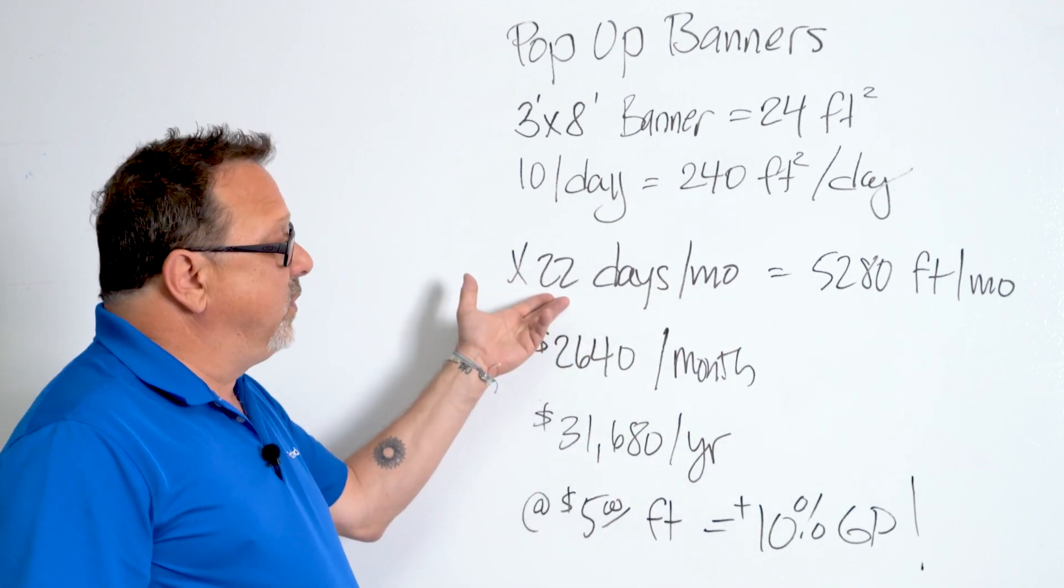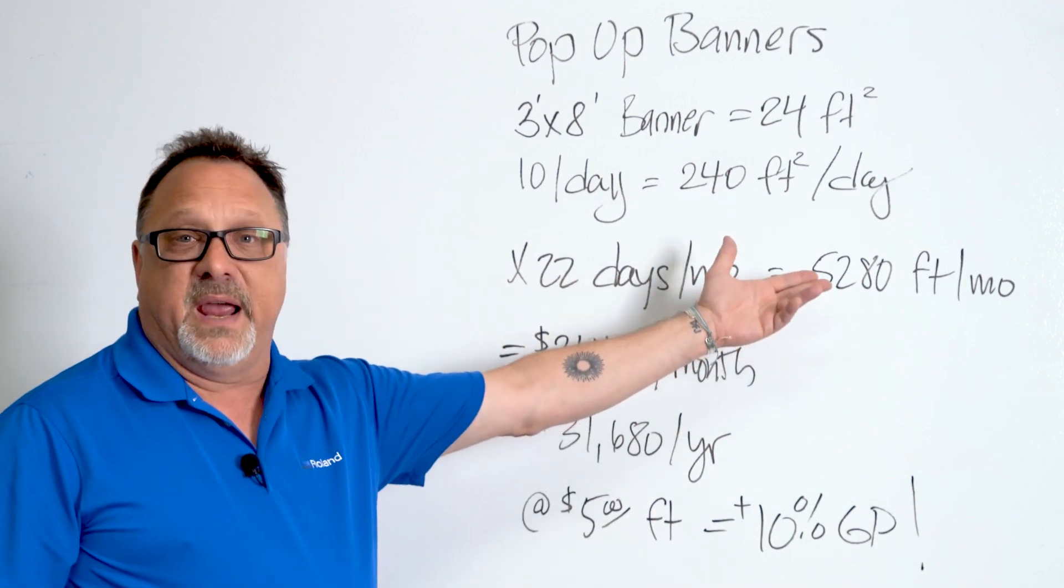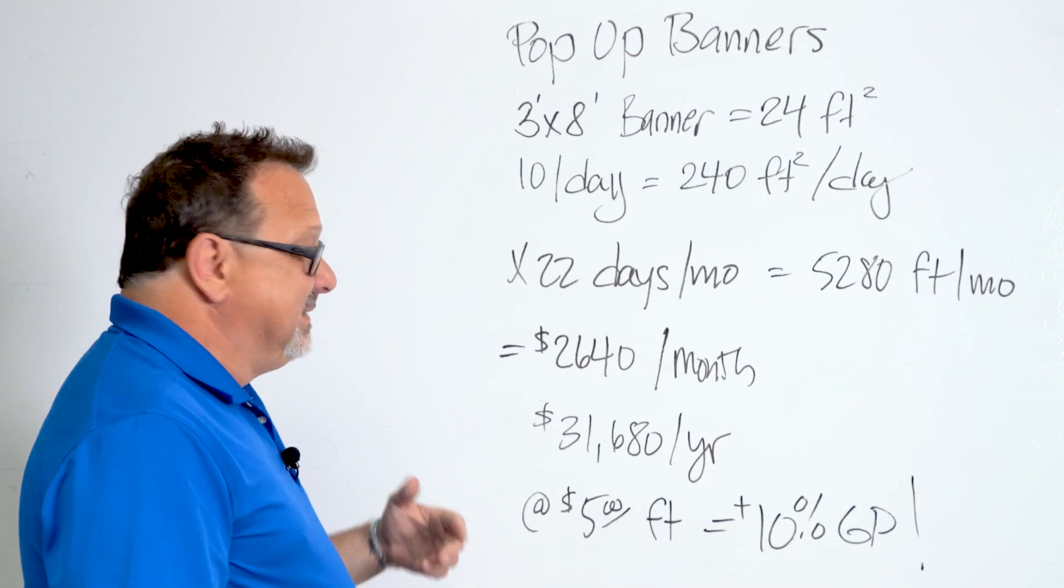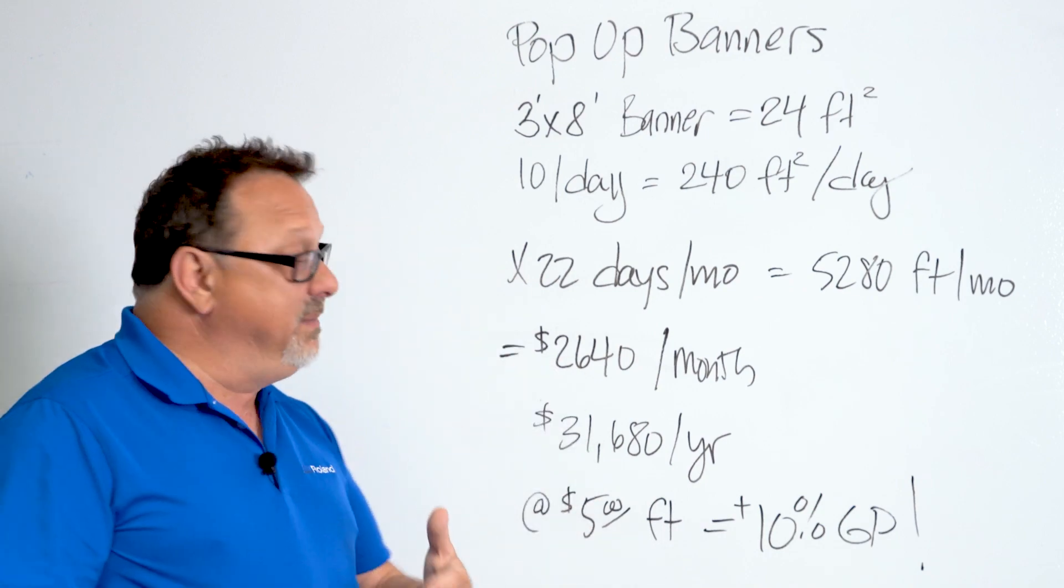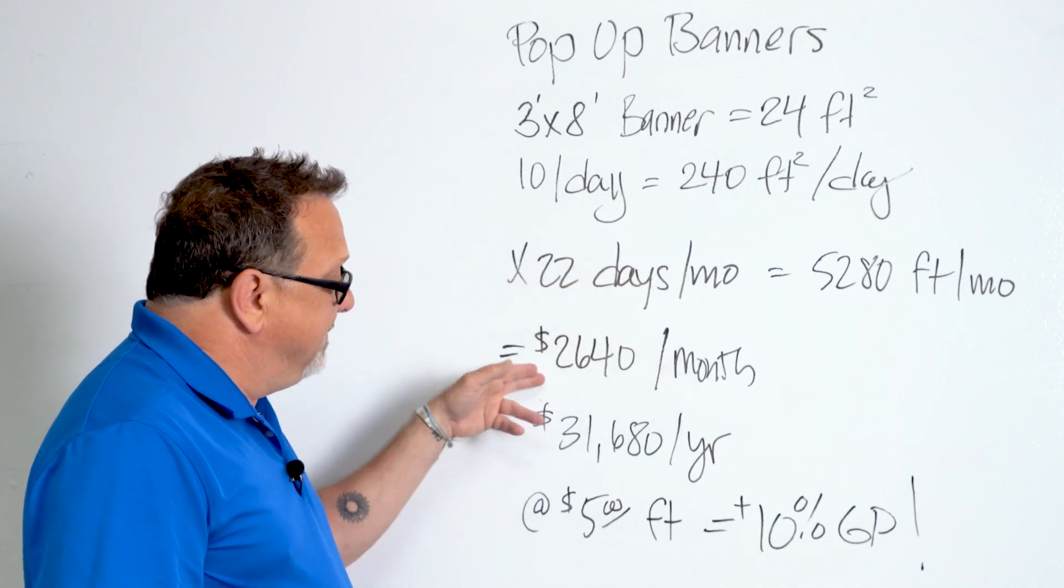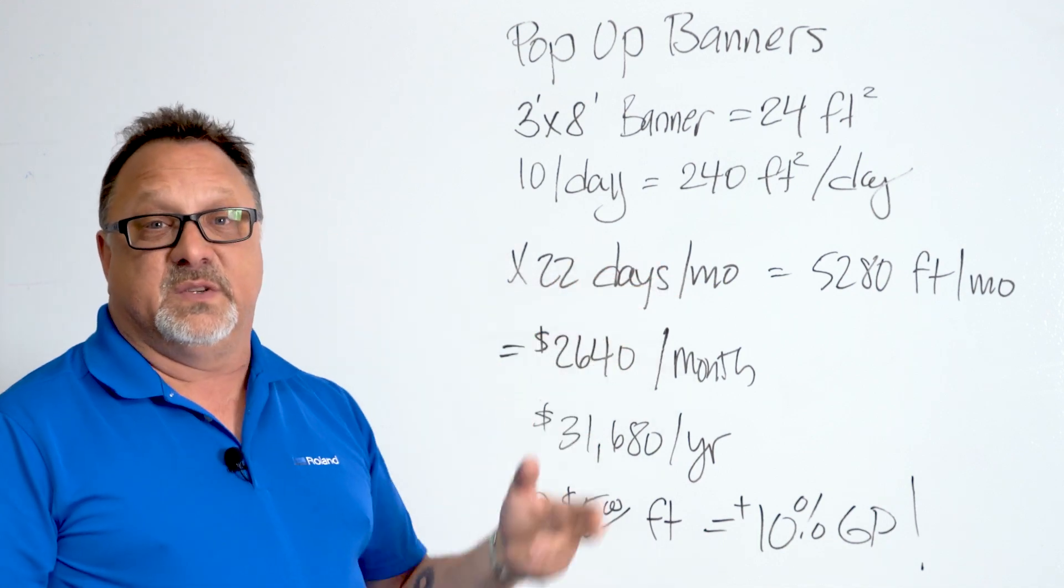On a 22-day work month, that's 5,280 square feet a month. So how does that translate? If we're saving 50 cents a square foot by not having to laminate, over the course of that same month, that's going to save us $2,640.